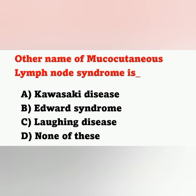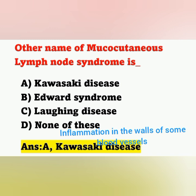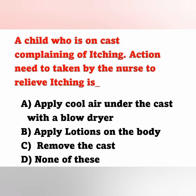Next question: Other name of mucocutaneous lymph node syndrome — Option A: Kawasaki disease, Option B: Edward syndrome, Option C: Laughing disease, Option D: None of these. The correct answer is Option A — Kawasaki disease. Kawasaki disease is an acute inflammation of the walls of blood vessels in the human body and is most commonly seen in infants and children.